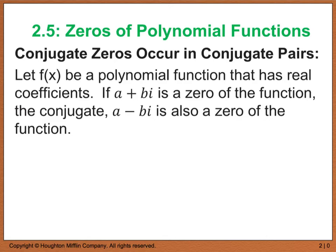It says that if we have a polynomial function that has real coefficients, and we know that a plus bi is a zero of a function, then we can automatically assume that a minus bi is also a zero of the function.